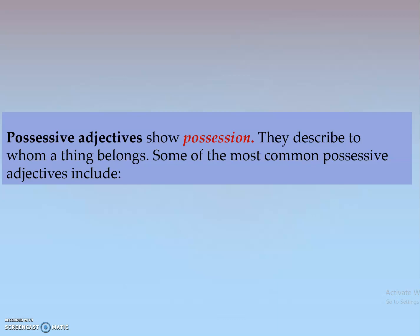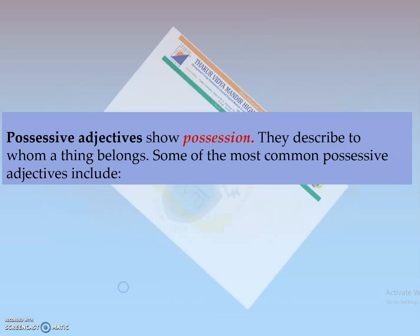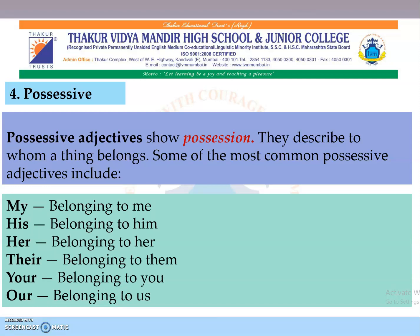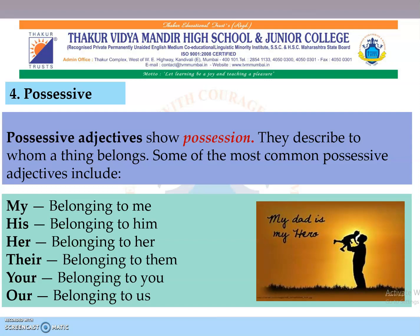Which bicycle is yours? Now, this question also has a beautiful adjective in it, and I would like you to guess which kind of adjective it is. Let us look at possessive adjectives. Possessive adjectives show possession. Some of the most common possessive adjectives include: my — belonging to me; his — belonging to him; her — belonging to her; their — belonging to them. My dad is my hero — here 'my' becomes a possessive adjective.